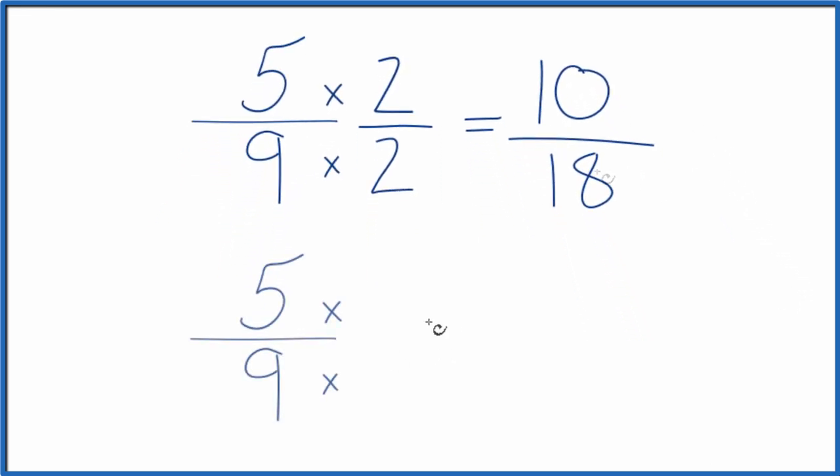Let's try another one. So we could multiply 5 ninths by 3 over 3, because again, 3 divided by 3 is just 1. We don't change the value. That way we end up with 15 twenty-sevenths, another equivalent fraction for 5 ninths.